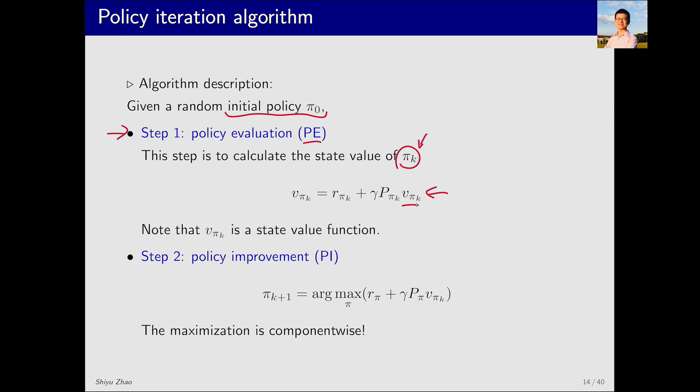Given πk, I solve vπk. This is to evaluate the policy. The second step is policy improvement. Based on vπk, we solve such an optimization problem to obtain a new policy πk+1, which is better than πk. Hence, it is called policy improvement. Why is it better? We'll explain later.